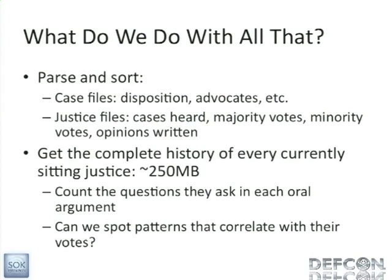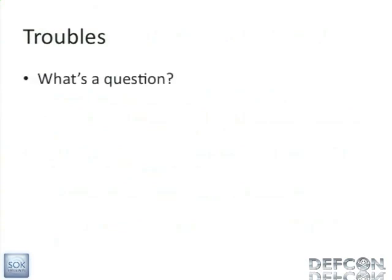I thought: let's just count the questions that they ask at oral argument. At oral argument, what happens is you stand up and say 'may it please the court' and you start into your argument, and about 30 seconds in the justices start peppering you with questions and you never really get to say what you came to say. But you can see in the transcript who's asking what questions. I thought maybe we can spot some patterns that correlate between who's asking questions and how they're going to vote. Now, there are some problems. The first is: what's a question? I just decided for the purposes of this analysis, anytime a justice speaks — to the extent that they're recorded in the transcript with some words — that's a question. Any utterance, really.